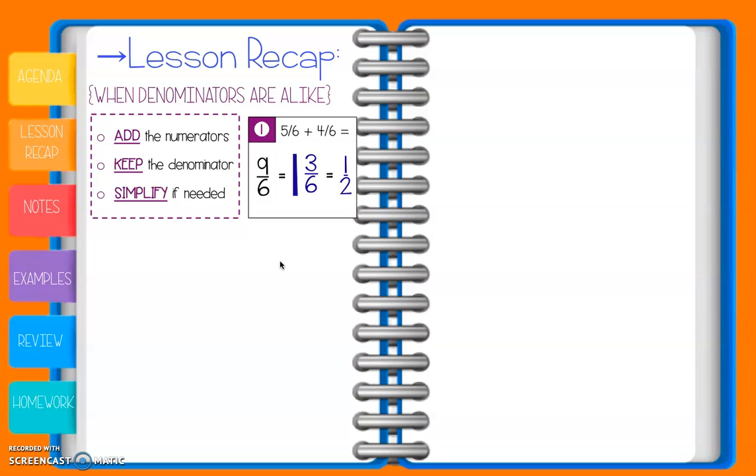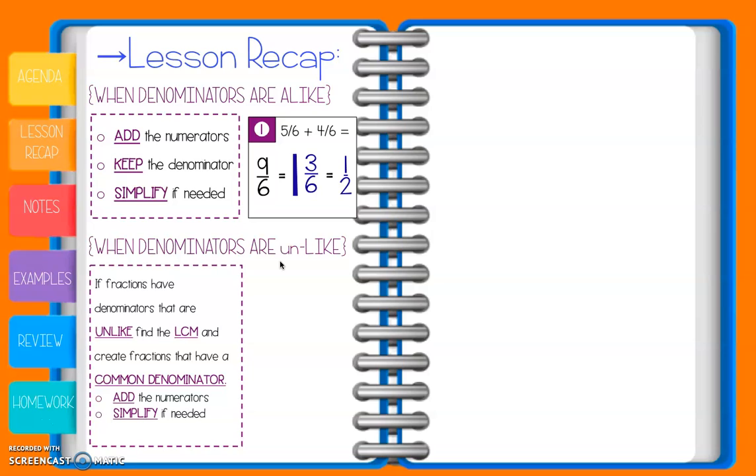So adding alike, add the numerators, keep the denominators, simplify. Now, there's an extra step added when we are adding fractions that have unlike denominators. If the fractions have unlike denominators, we have to find the LCM, or the least common multiple, and create common denominators.